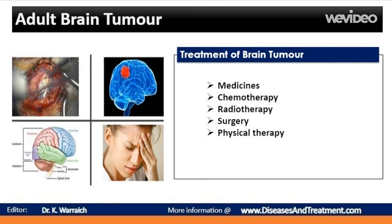The treatment of a brain tumor depends on the type of tumor, the size of the tumor, the location of the tumor, and your general health. The most common treatment for malignant brain tumors is surgery. The goal is to remove as much of the cancer as possible without causing damage to the healthy parts of the brain. While the location of some tumors allows for easy and safe removal, other tumors may be in an area that limits how much can be removed. Even partial removal of brain cancer can be beneficial. Risks of brain surgery include infection and bleeding.